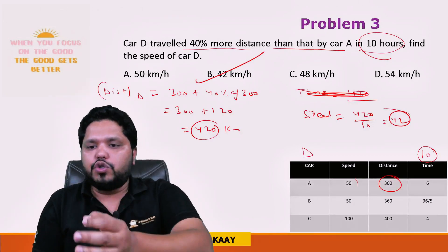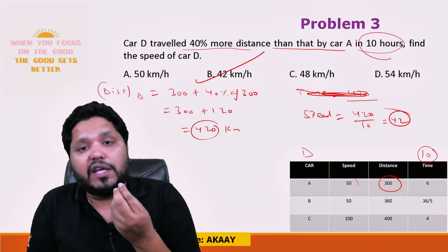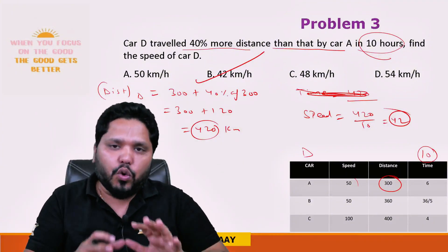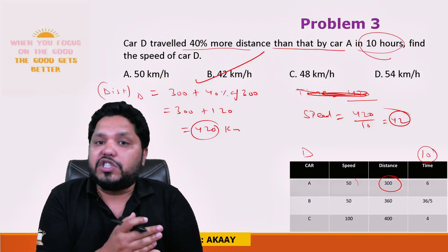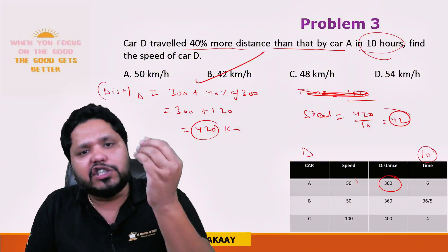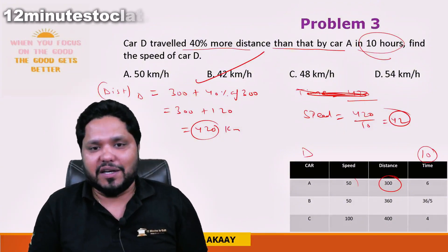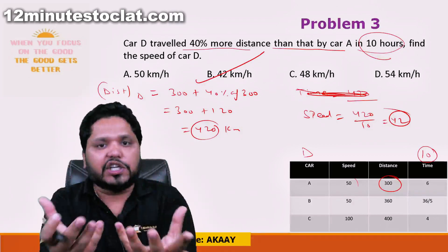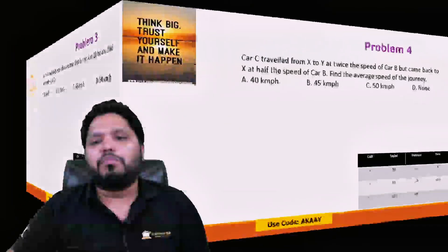Once you've built the table and solved the data, the questions become very easy if you know the basics of Time, Speed and Distance. Only basic understanding of any quant topic is checked in the CAT exam — no need to do very advanced questions from any topic, as they will never come in your exam.